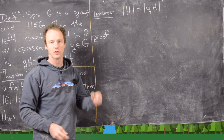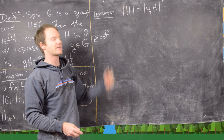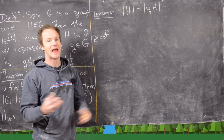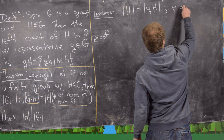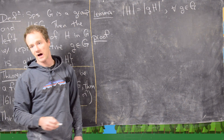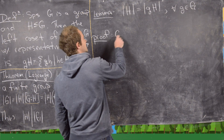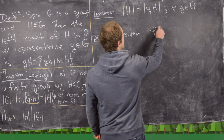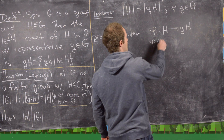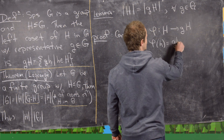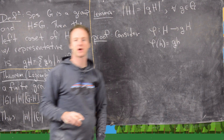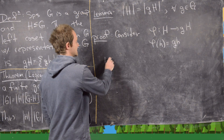The next lemma to prove is that if H is a subgroup of G, then the size of H equals the size of any of its cosets — so all cosets have the same size. We can prove this by constructing a bijection. Consider the map φ: H → gH defined by φ(h) = g·h, where h is an element of H and g·h is in the coset.